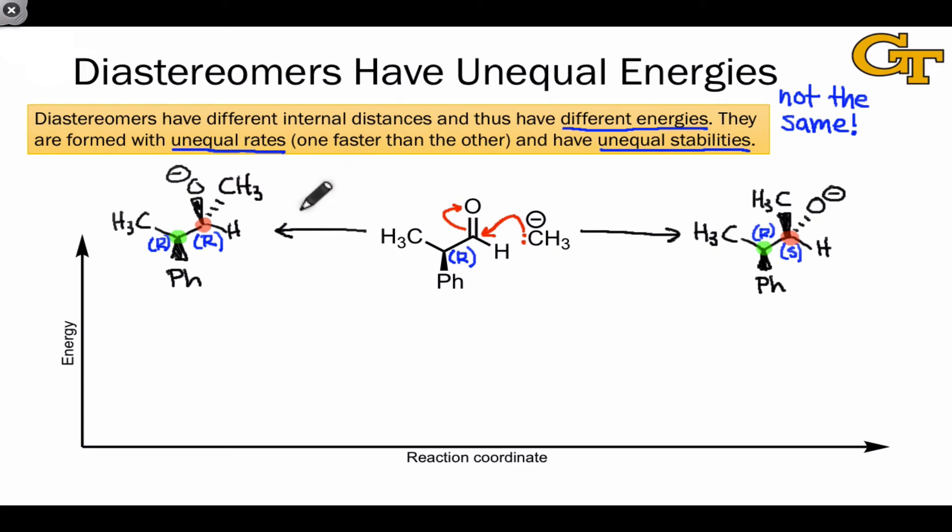Although I won't show it in detail, it's fairly easy to see that the transition states leading to these products will also be diastereomeric, since the only difference between the transition states and the final products is partial versus full bonds, a little bit of geometry change, and partial versus full charges. By examining the isomeric relationship between the two possible products and concluding that they're diastereomers, we can immediately also conclude that they'll have different energies.